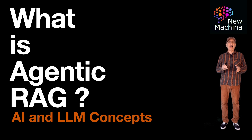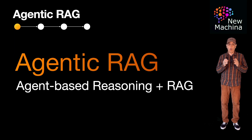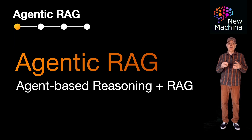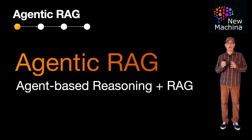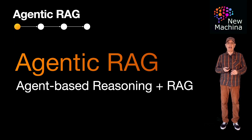Agentic RAG is an emerging design pattern that combines retrieval augmented generation, or RAG for short, with agent-based reasoning and decision making. It refers to LLM-driven systems where the RAG retrieval component and the response generation component are orchestrated by an agentic workflow that can reason and take multiple steps to accomplish a task.